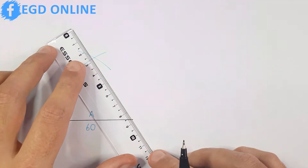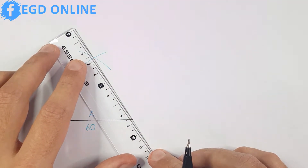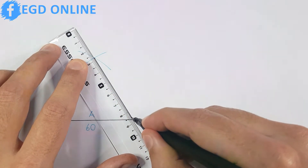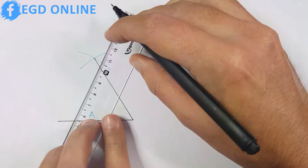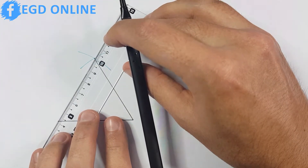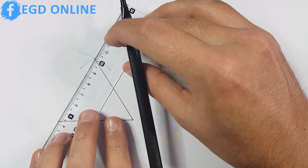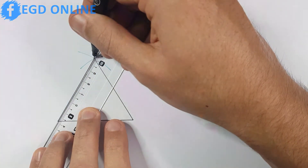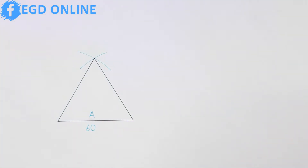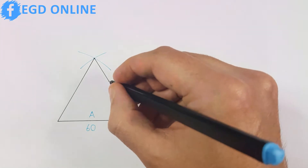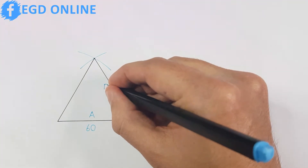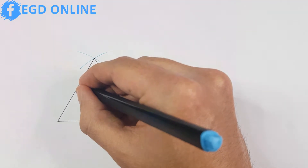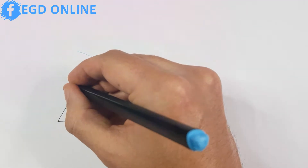Next, take your ruler and place it on the crossing point. Draw two lines to both ends of your side A. You can label these two sides as B and C, and that is how you construct an equilateral triangle.